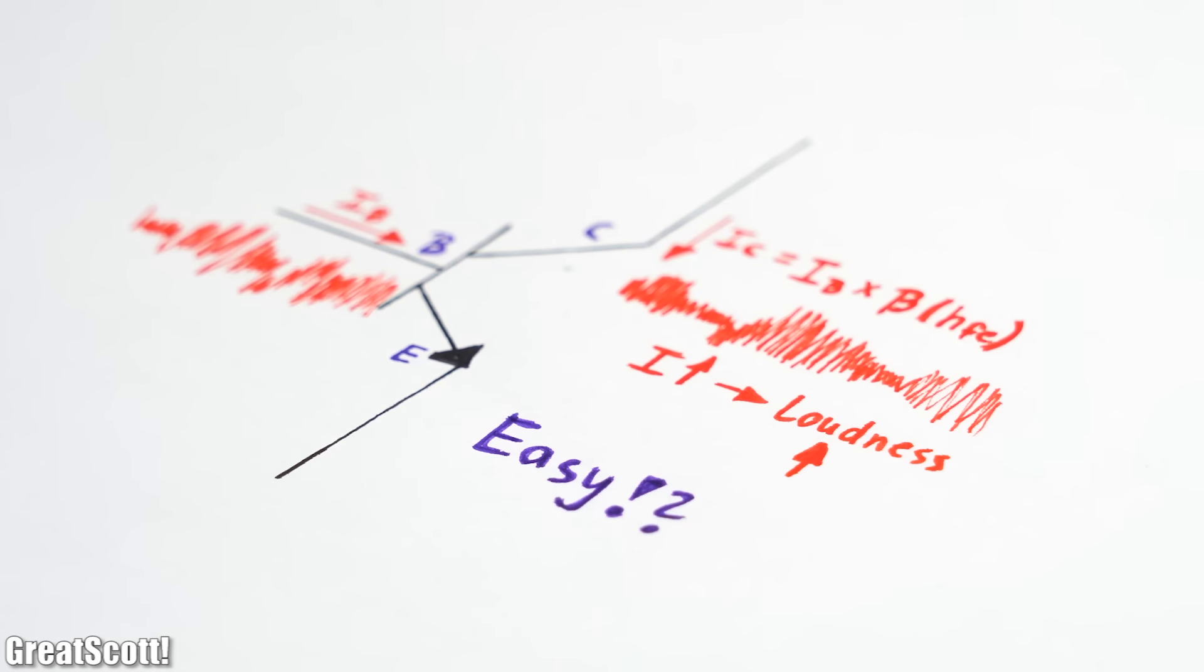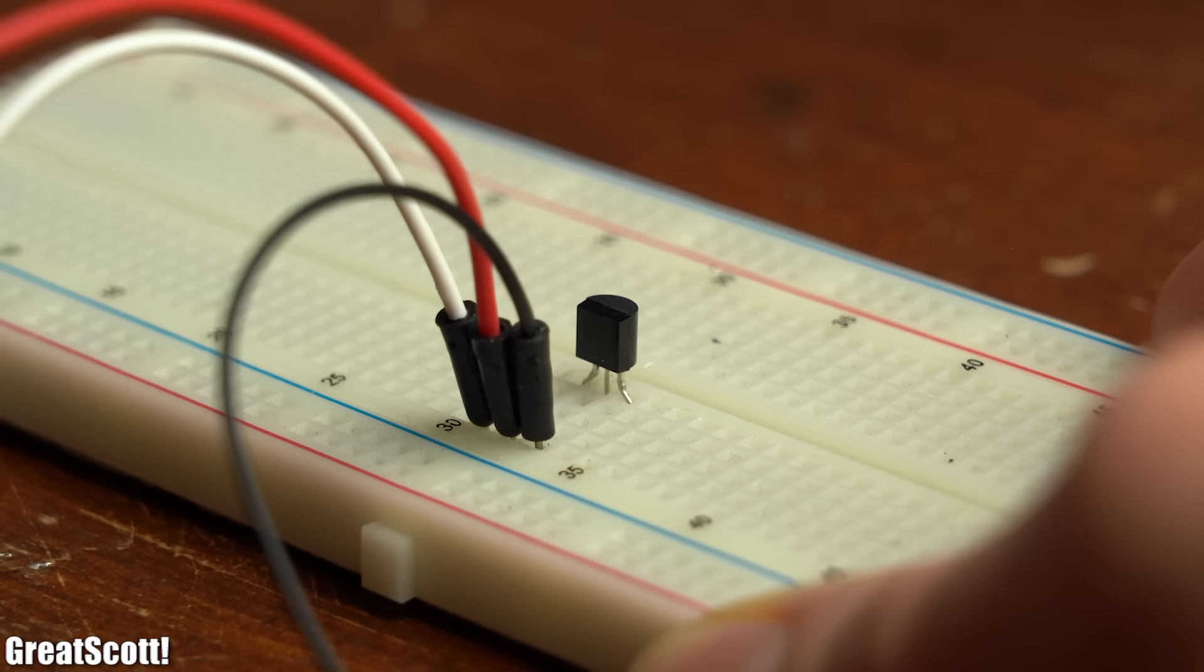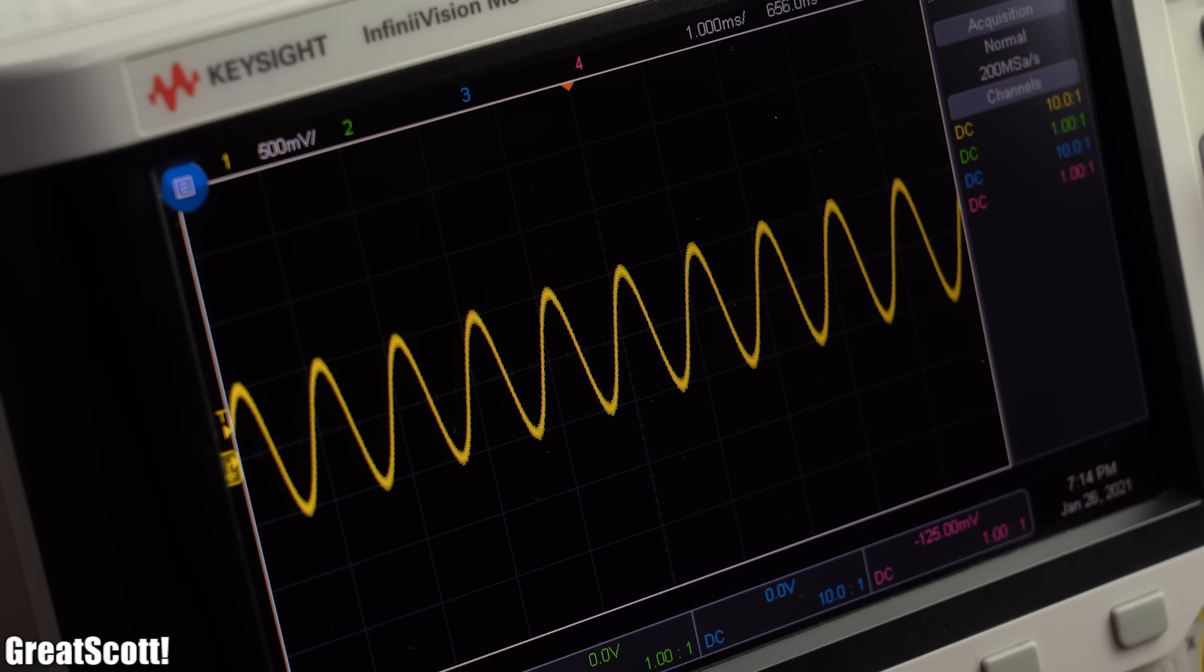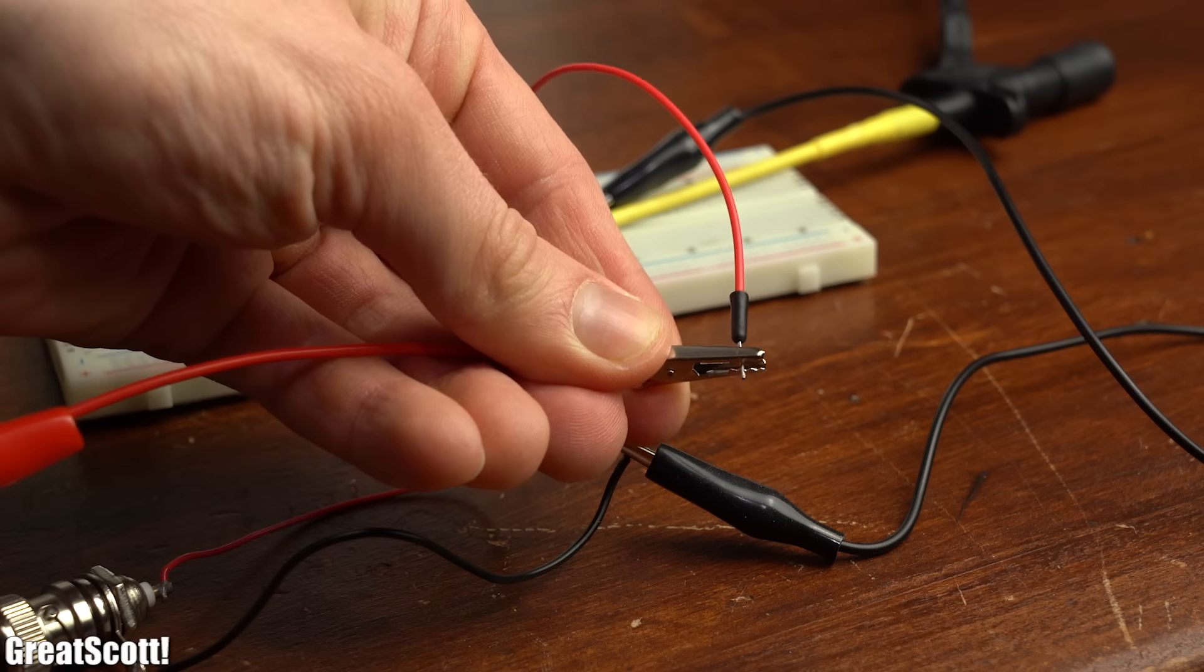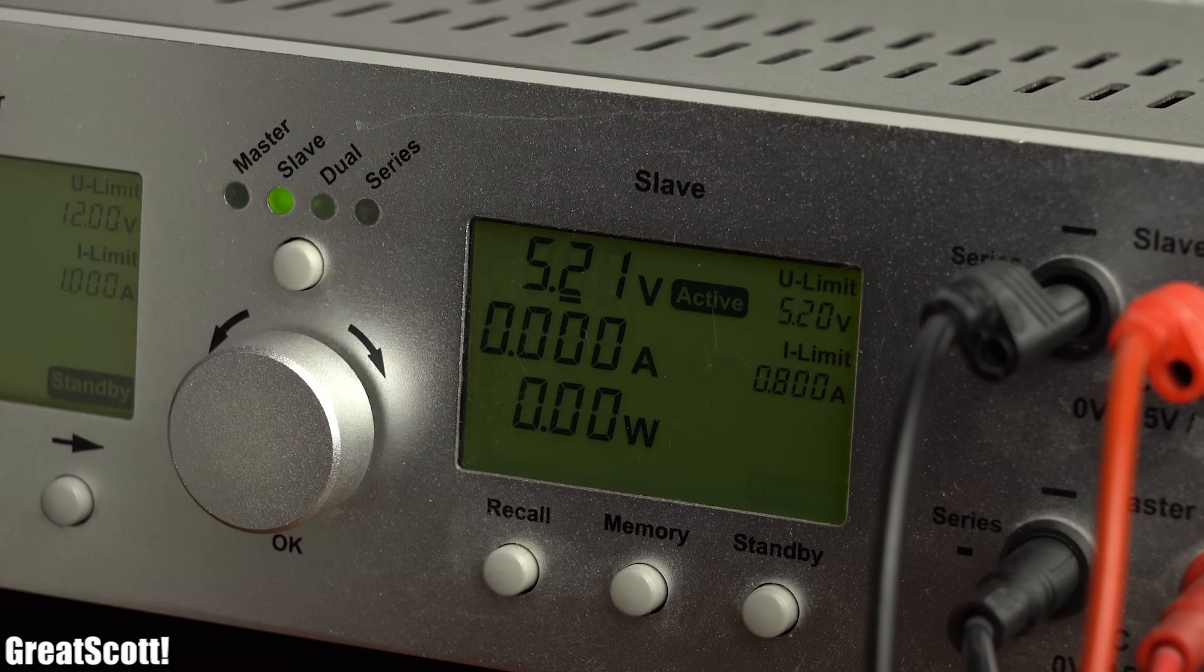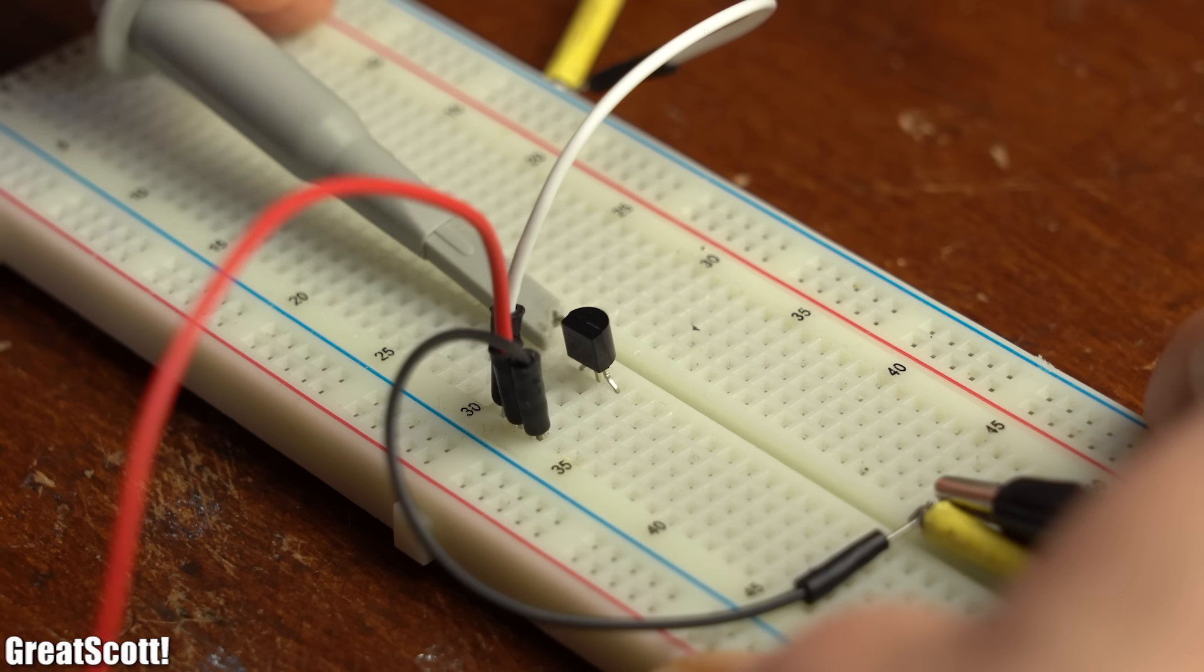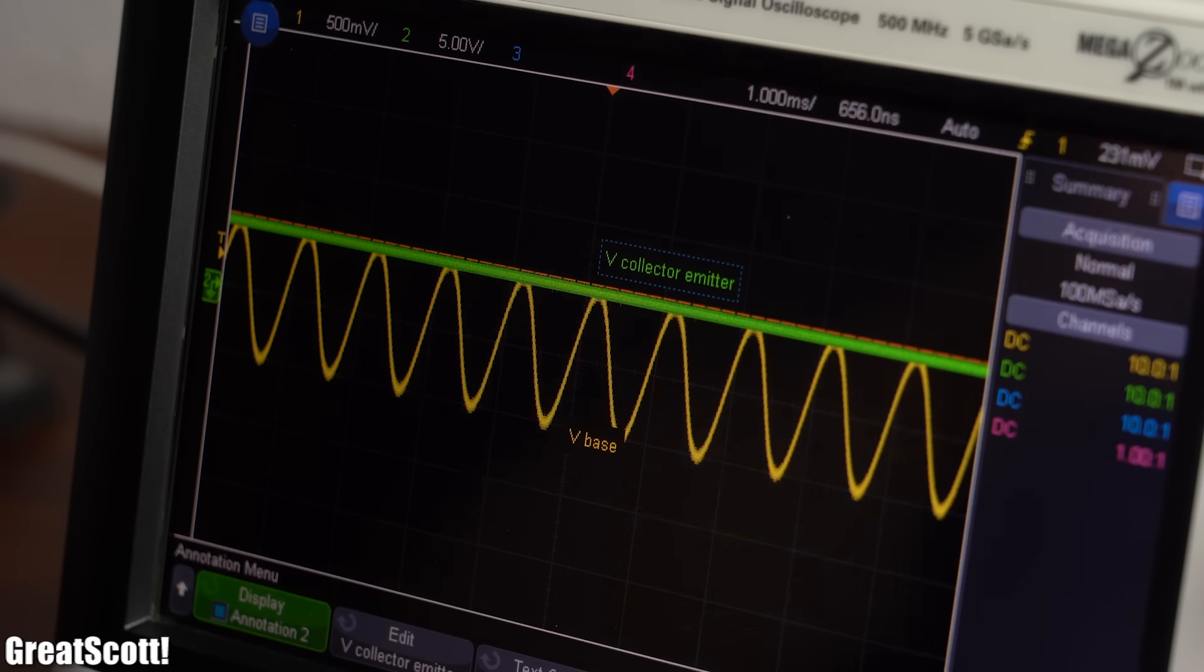Sounds pretty straightforward, but of course such a simple setup does not work just yet. As you can see, while using a sine wave created by a function generator on the base input of the transistor, pretty much no current flows through the collector and there is also only the DC supply voltage visible at its collector-emitter path.